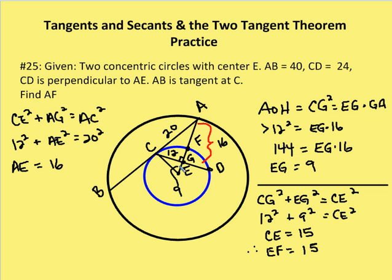This is why I love the book we're currently using — it's spiraling content learned in prior sections. So you have to remember your altitude and hypotenuse theorem. This is a right angle here; CEA is a right angle, so I have an altitude and hypotenuse. CG is equal to 12 units, AG is equal to 16. CG squared is equal to EG times GA. So 12 squared, which is CG, is equal to EG times 16. And if you do the math, you end up with EG being equal to 9. So E to G is equal to 9.